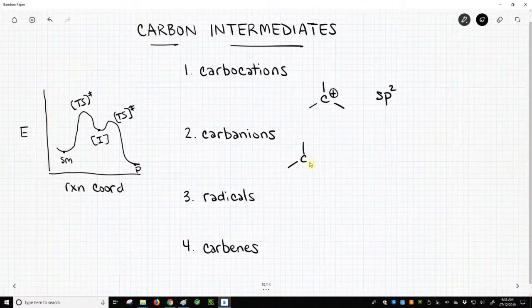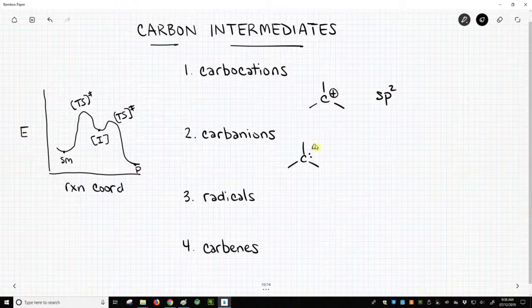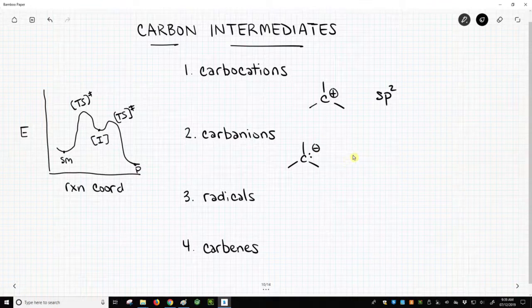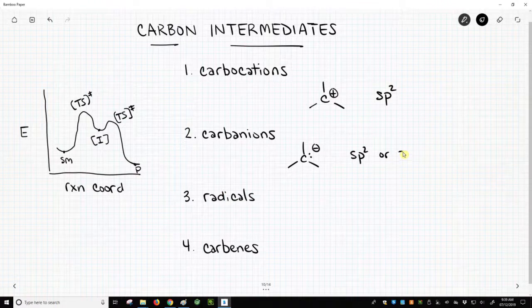Carbanions are much like carbocations except they have a lone pair, and that gives the carbon a negative charge. Carbanions are typically sp2 or sp3 hybridized.